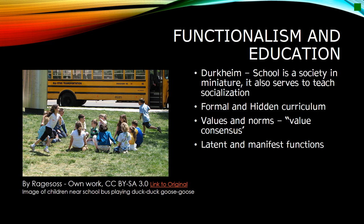These norms, values, and beliefs are known as the value consensus. We also see Merton's manifest and latent functions in education. Manifest functions or primary functions are the functions which people assume and expect institutions to fulfill. Latent or secondary functions are unrecognized and unintended functions. A primary function of education may be the transference of norms, and an example of a latent function may be marriage, as students are socially exposed to those at the same socioeconomic level through the college experience.